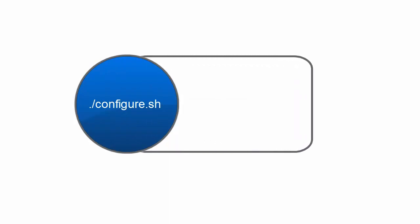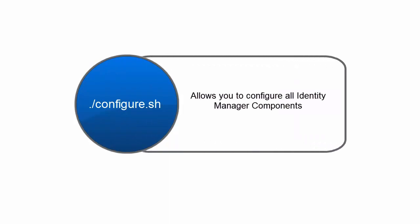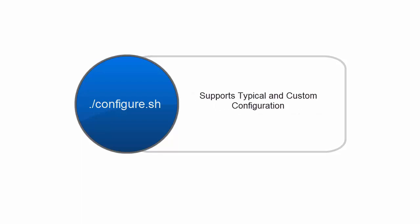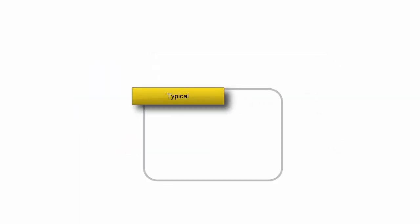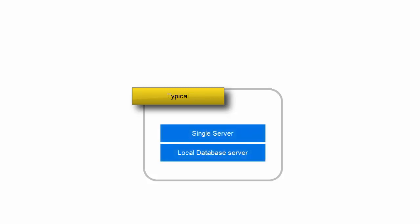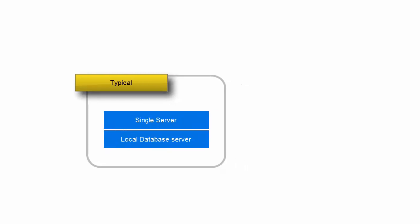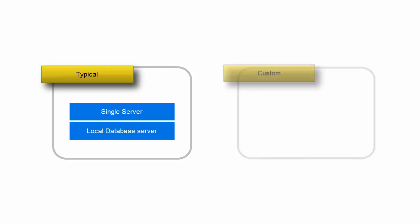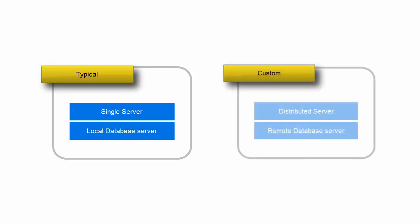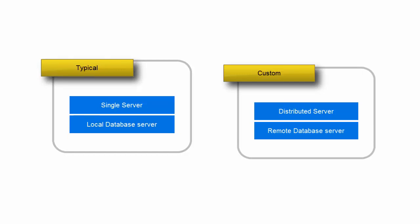The configuration script configures the components based on the inputs provided during the configuration process. Identity Manager 4.7 supports two modes of configuration. Typical configuration prompts you to specify minimal inputs and assumes default settings for most options. Custom configuration allows you to specify values according to your requirement and lets you customize most of the settings.